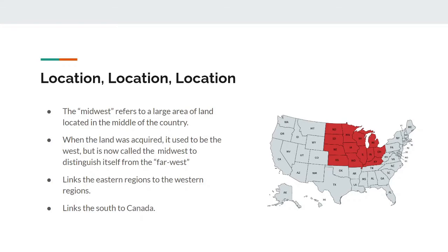The Midwest refers to a large area of land located near the middle of the United States. Precisely speaking, with our definition of regions, the geographic center of the Midwest is actually closer to the East Coast than to the West Coast, yet it's still called the Midwest and not the Mideast. Part of the reason why is that when this land was acquired a long time ago, it was actually the westernmost part of the United States at that time. People didn't know about states like Colorado, Arizona, and California since they didn't exist back then.